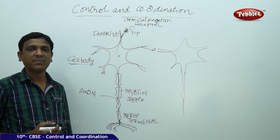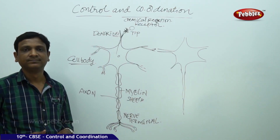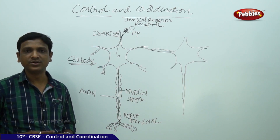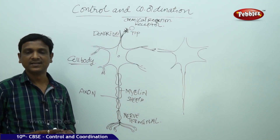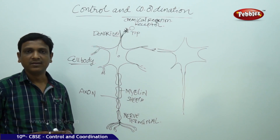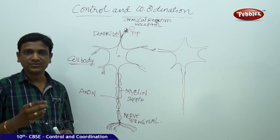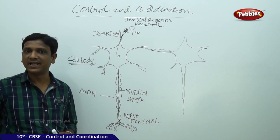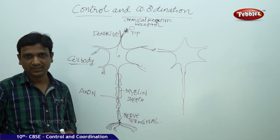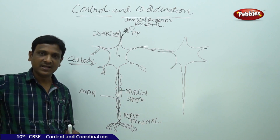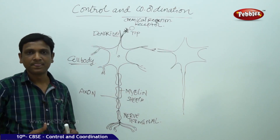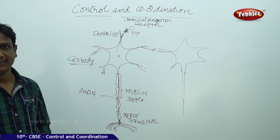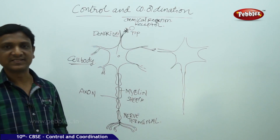Just as electricity passes through copper wires — like in house wiring with switchboards, electric bulbs, and fans — an electrical appliance must be connected to the power supply through a cable for electricity to pass and make it work. In the same way, information received at the receptor generates an electrical impulse carried by the nerve cell.